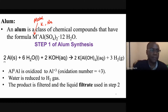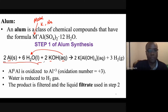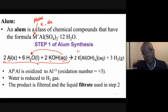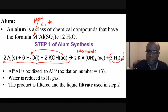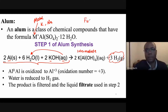Step one: reacting aluminum with potassium hydroxide dissolved in water gives you the first intermediate — potassium aluminum tetrahydroxide — and hydrogen gas is produced. This is why you must always use the fume hood in the lab; it traps poisonous gases and fumes such as hydrogen gas that would otherwise make you sneeze, cough, and cry.